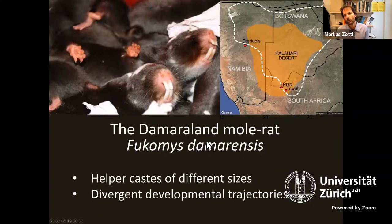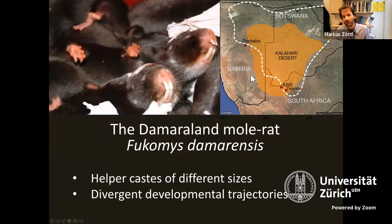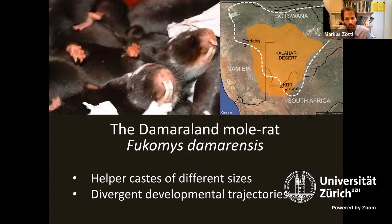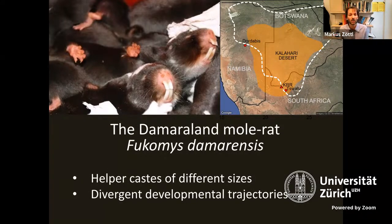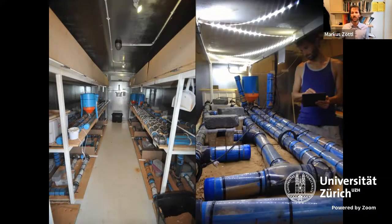Damaraland mole rats live in the Kalahari Desert in central Botswana, with their distribution extending into Namibia and South Africa. We study them at the Kuruman River Research site, where Tim Clutton-Brock and Martin Manser also conduct their meerkat research. When I started my postdoc with Tim Clutton-Brock, he had the idea of finding a mammalian system where experiments could be conducted on a large number of groups to investigate how individual variation in cooperative behavior emerges and what the consequences are.